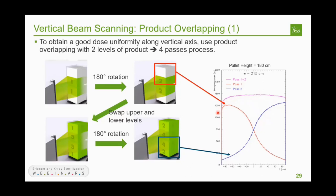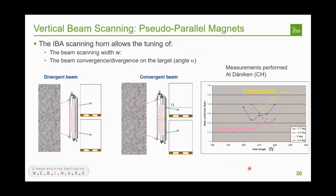IBA systems use a pseudo-parallel magnet so the beam hits the target at 90 degrees, but there is also the possibility to use slightly divergent or slightly convergent beams. Measurements at the Daniken center in Switzerland show that playing with convergent angles can also slightly improve dose uniformity. Using purely parallel beams in blue versus angled beams, you can improve the DUR from 1.35 down to slightly less than 1.2.